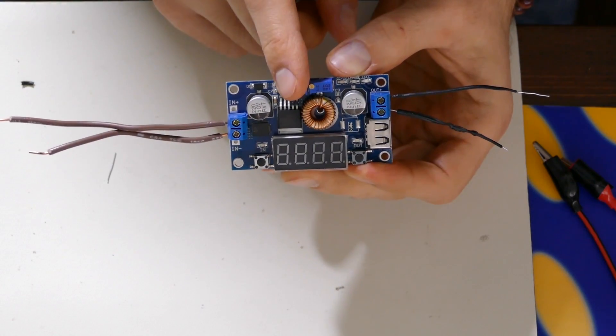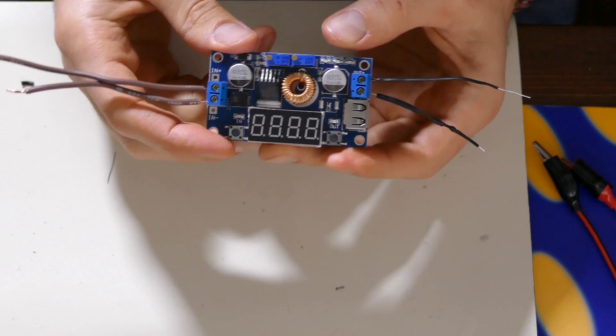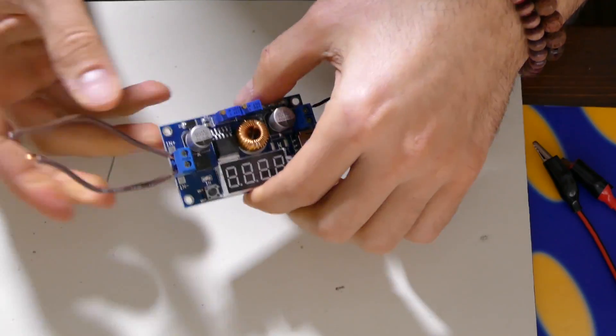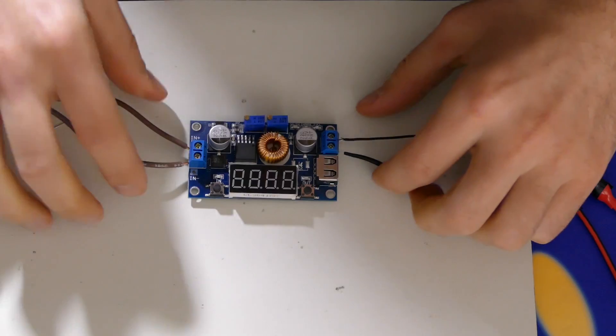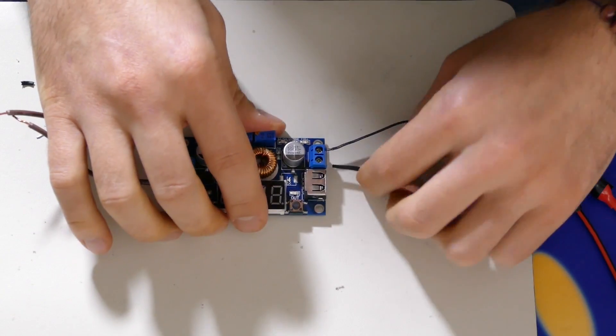And there's a voltage and current potentiometer here that you can use to limit that. So we're going to just test it out quickly. I'm not going to take too much time on this one, it's pretty straightforward.